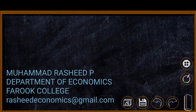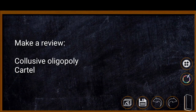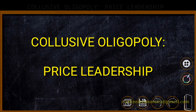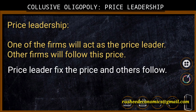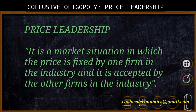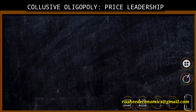In our last video we explained about cartel, which is one form of collusive oligopoly. In this video we are going to explain about another form of collusive oligopoly — price leadership. In price leadership, one of the firms acts as the price leader and others follow. We can define price leadership as a market situation in which the price is fixed by one firm in the industry and accepted by the other firms.